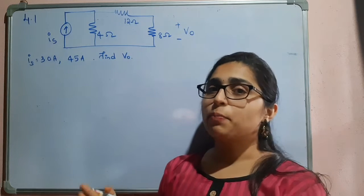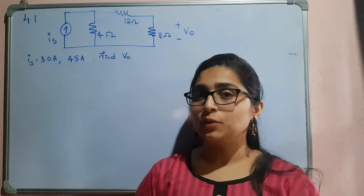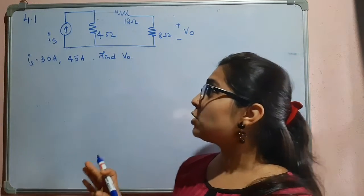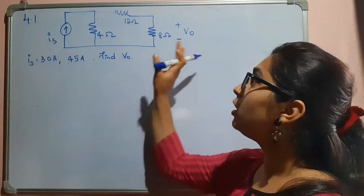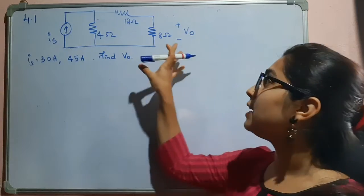Hello everyone, this is a practice problem from Sedra-Smith textbook. Here they have asked you to find out the voltage V0 which is across the 8 ohm resistor for different values of IS.